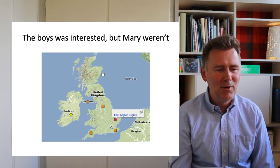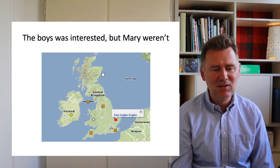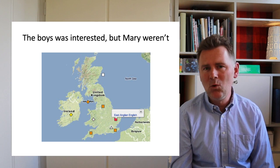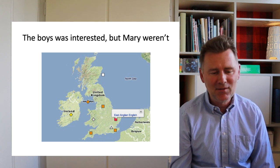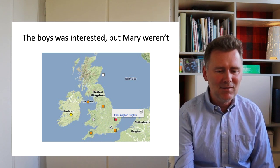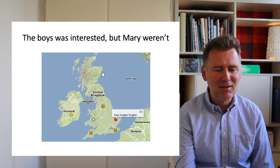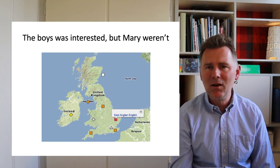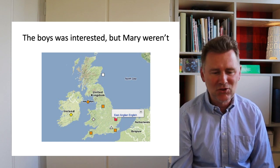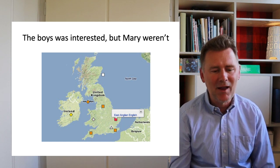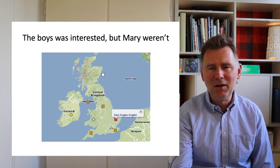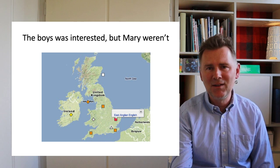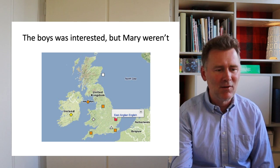'The boys was interested, but Mary weren't.' The was-weren't split is something we have, for example, in East Anglian English — one of the traditional L1 varieties of English represented in the E-Wave Atlas.